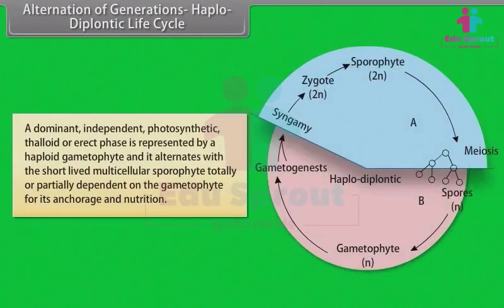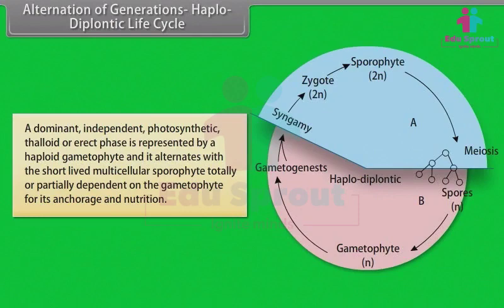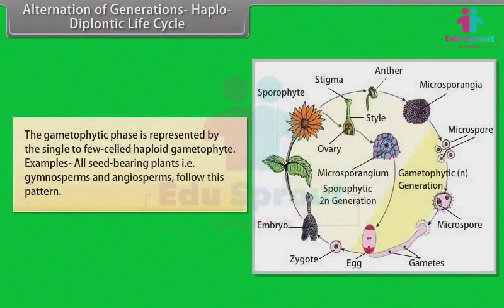In the haplodiplontic life cycle, a dominant independent photosynthetic thalloid or erect phase is represented by a haploid gametophyte, and it alternates with a short-lived multicellular sporophyte that is totally or partially dependent on the gametophyte for its anchorage and nutrition. The gametophytic phase is represented by the single to few-celled haploid gametophyte. All seed-bearing plants — that is, Gymnosperms and Angiosperms — follow this pattern.